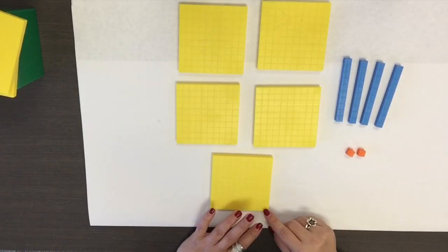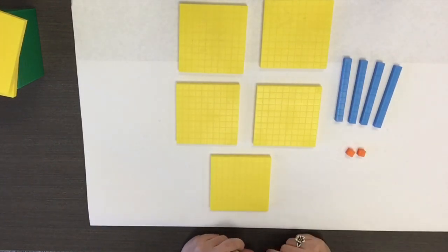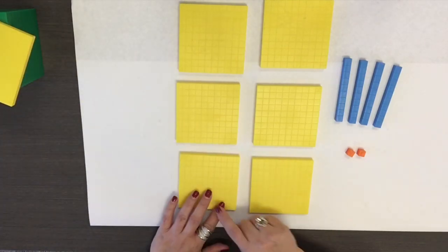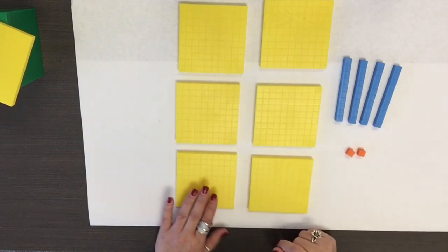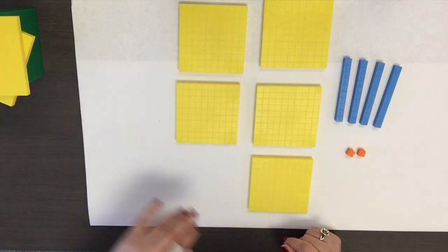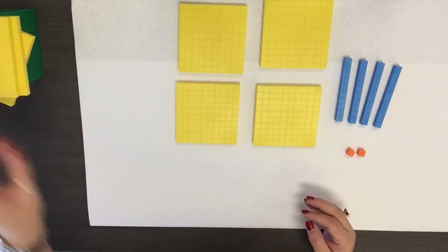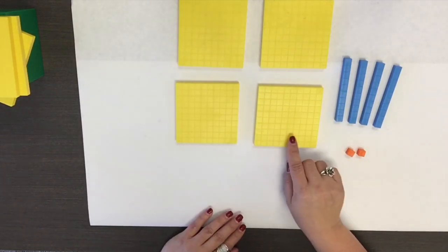When modeling 100 more, 100 less, use base 10 blocks to represent 540: 5 hundreds, 4 tens, 0 ones. Add 100 to the representation to model 100 more, or 642. So increasing that hundreds place by one gives me a model of 642. To model 100 less, take away 100, modeling 442. So my 100 place has decreased by one, showing me a model of 442.